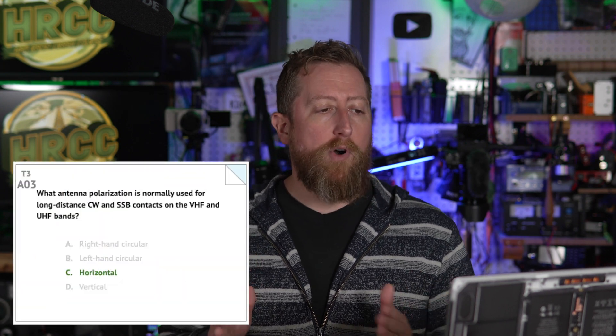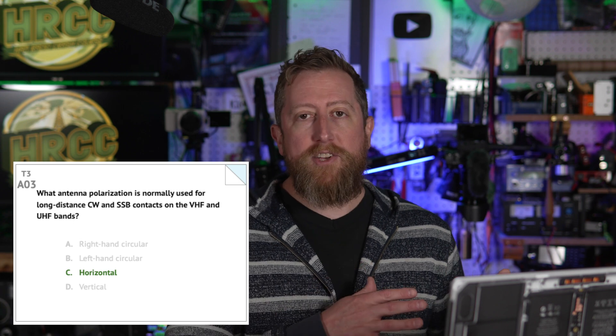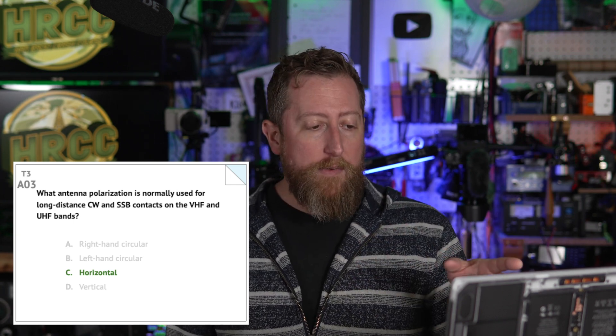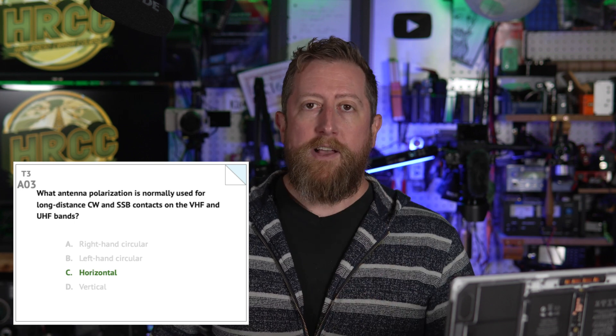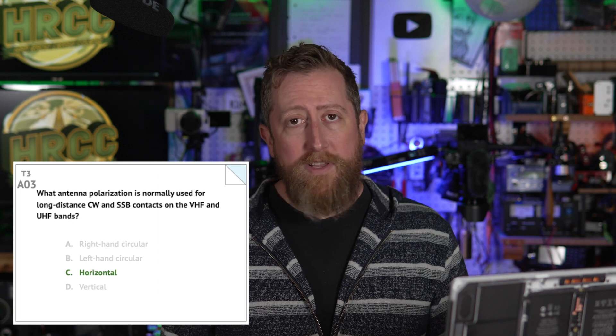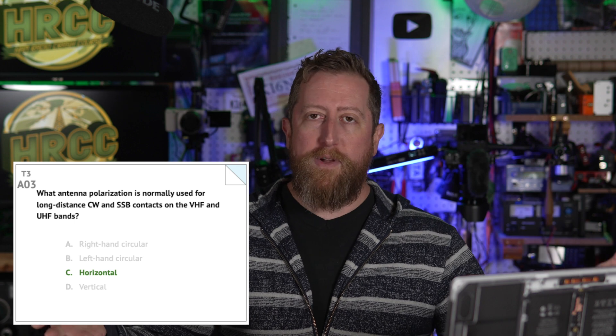Alpha 03: What antenna polarization is normally used for long distance CW and SSB — single sideband — on the VHF and UHF bands? The answer is C: horizontal polarization. Now, FM — frequency modulation — generally uses vertical polarization. Some have asked why, and the answer is really because that's how it was decided in the past and it's stuck. There's no inherent benefit to horizontal or vertical unless talking about specific antenna designs — it's more about using what everybody around you is using to maximize the chance your signal is heard.